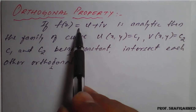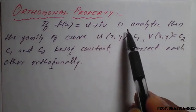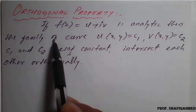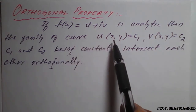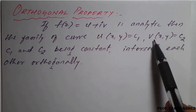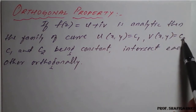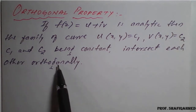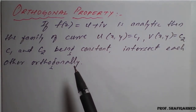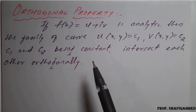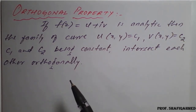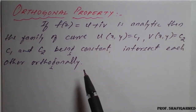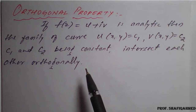Statement: if f(z) = u + iv is an analytic function, then the family of curves u(x, y) = c1 and v(x, y) = c2, where c1 and c2 are constants, intersect each other orthogonally. Orthogonally means the multiplication of the slopes of these two functions will be minus 1, or they make an angle of 90 degrees.